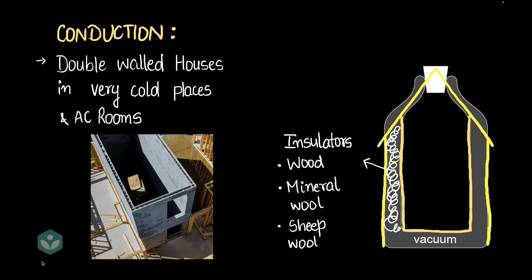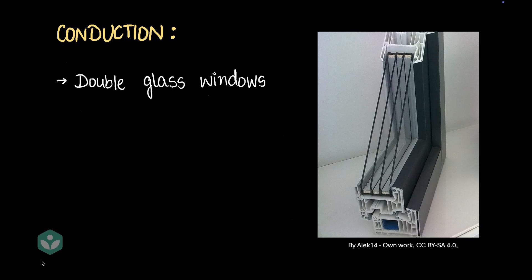Okay, now back to tackling heat loss by conduction. What do we do about windows? Well, here's the answer. We can have double-walled glass windows. We could even have four glass windows, right?